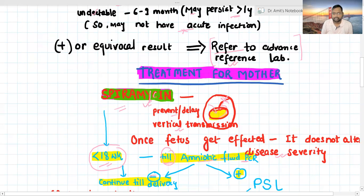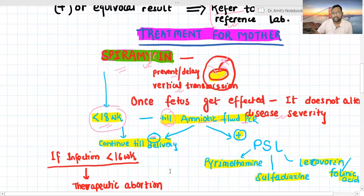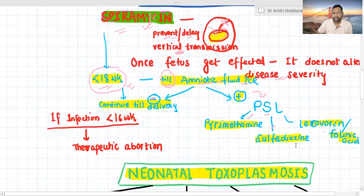If it is negative, negative result does not mean the child is not infected. You have to continue till delivery because it prevents or delays vertical transmission. If it is positive, you have to give treatment for this. We have PSL: pyrimethamine, sulfadiazine, and leucovorin or folinic acid. You have to give till term.